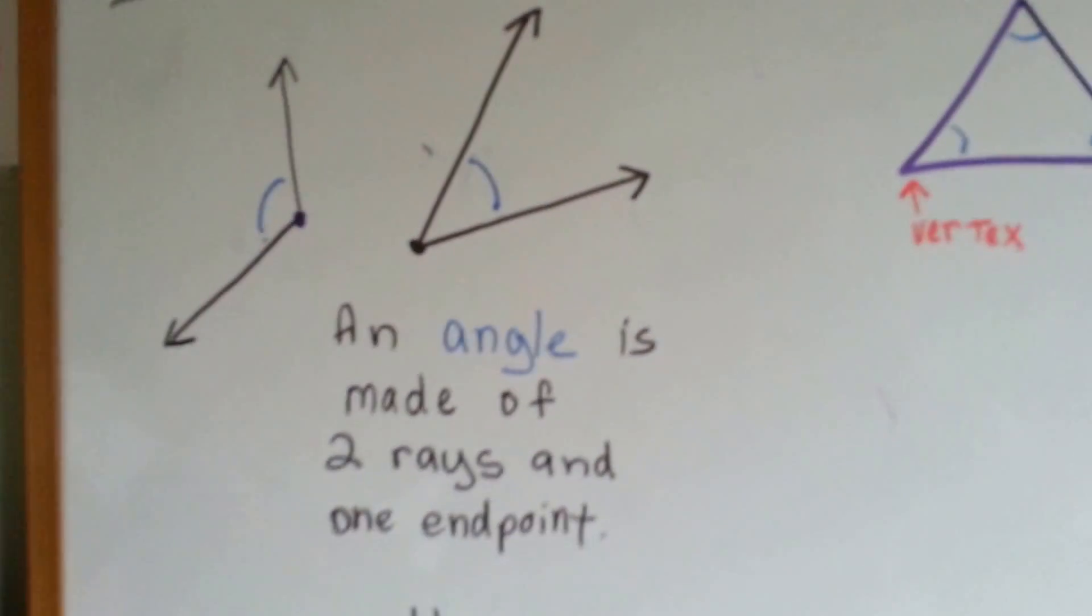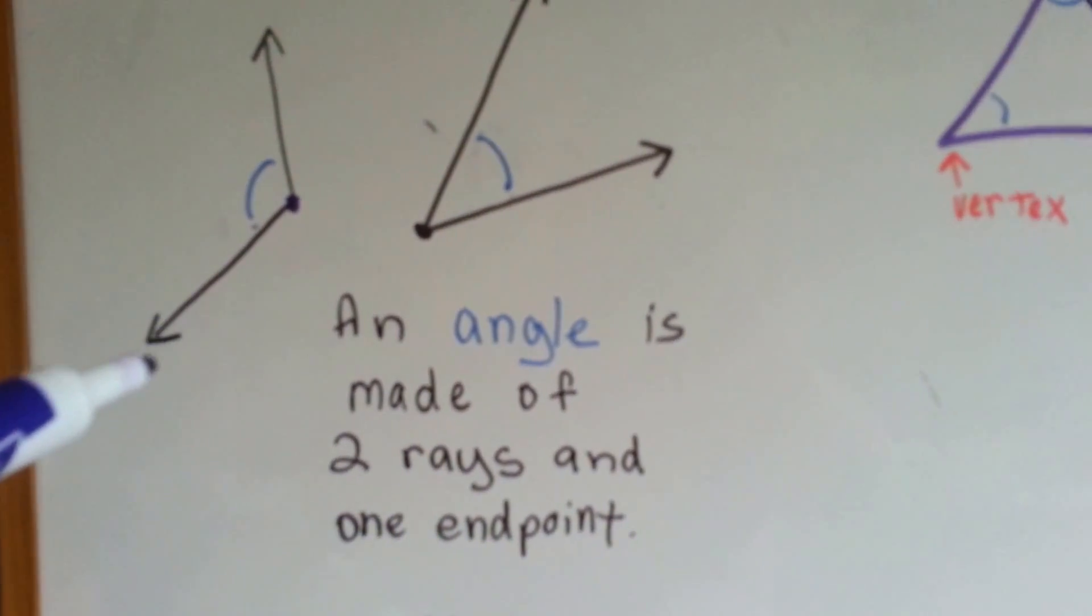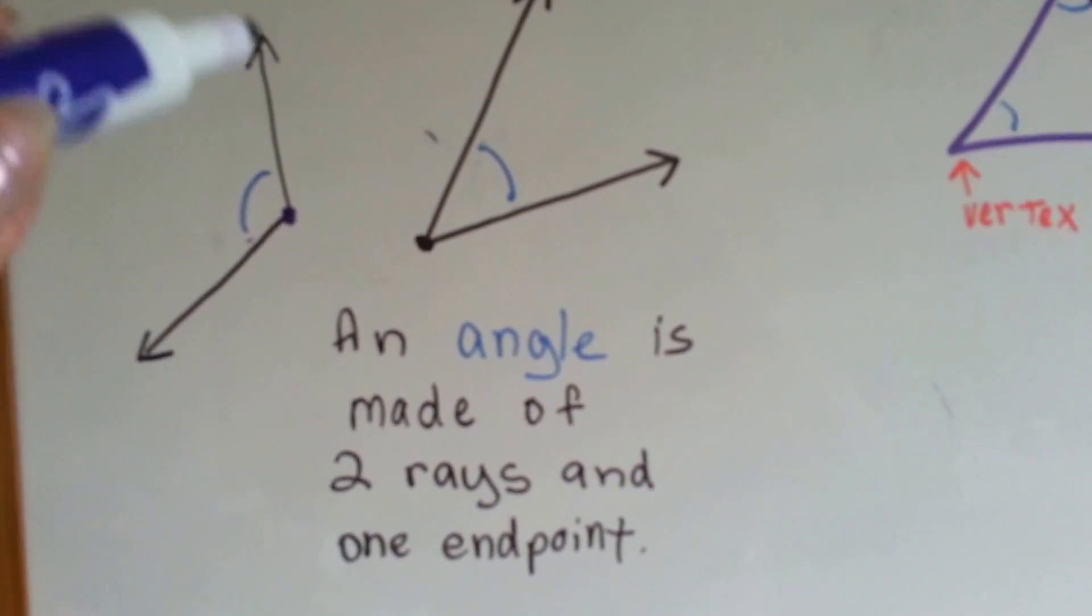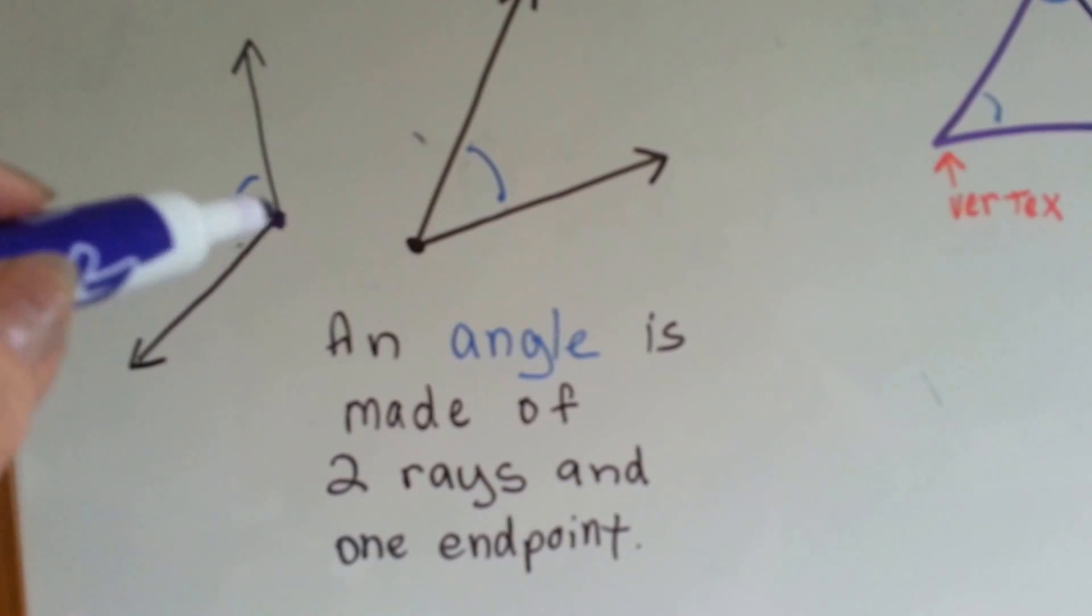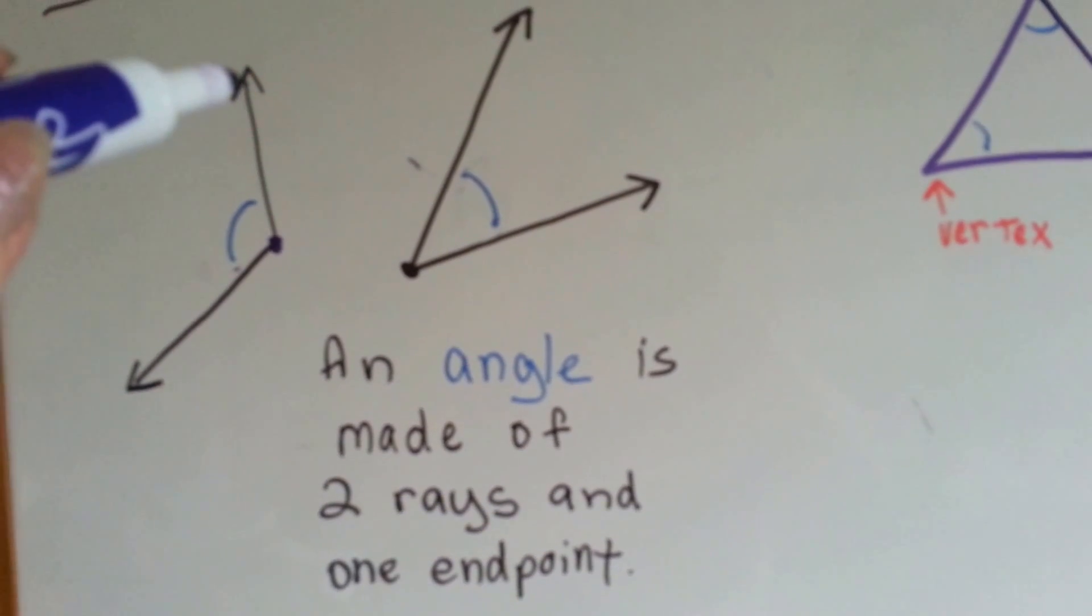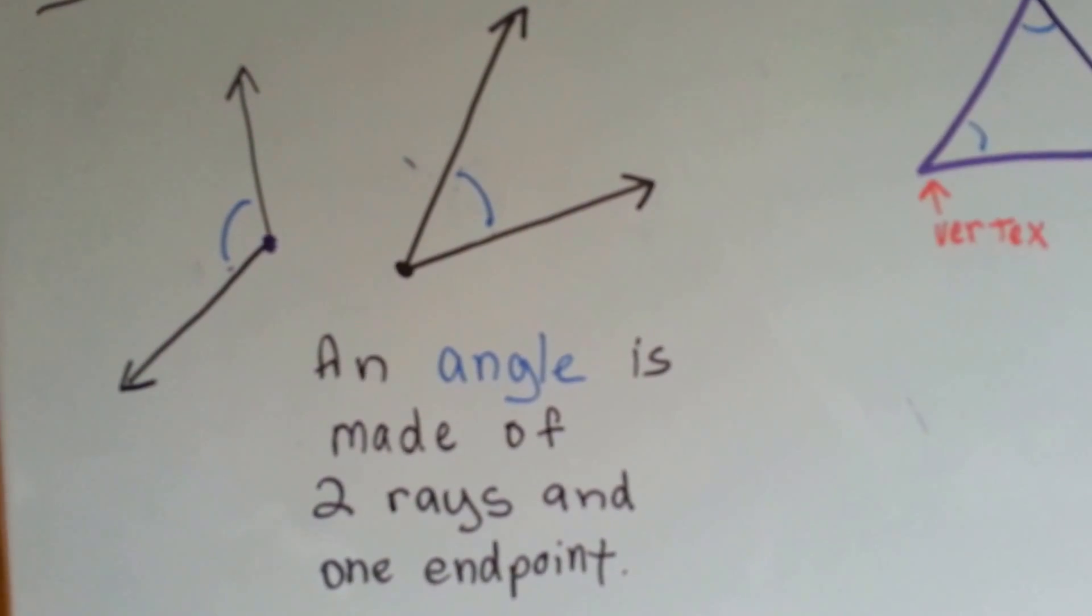The first thing is angle, and it's made of two rays and one endpoint. A ray is a line segment that has an endpoint and an arrow at the other end that continues on and on.